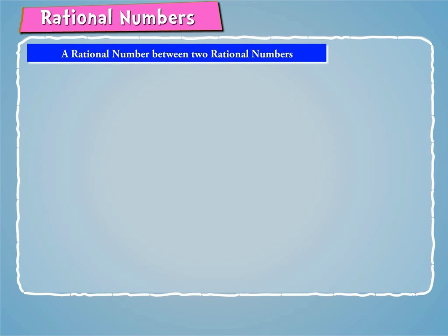A rational number between two rational numbers. Let us consider, for example, two rational numbers 4 by 5 and 3 by 4.